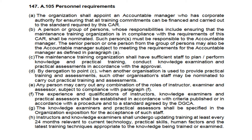Next is Personnel Requirements. The organization will have an Accountable Manager, who has corporate authority as we have studied in the previous series. After the accountable manager, a person or group of persons will be nominated to ensure that everything happening in the maintenance organization is in compliance with all requirements. These persons are directly responsible to the accountable manager.